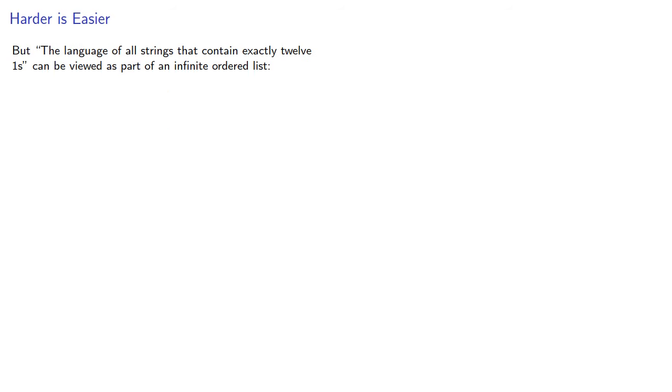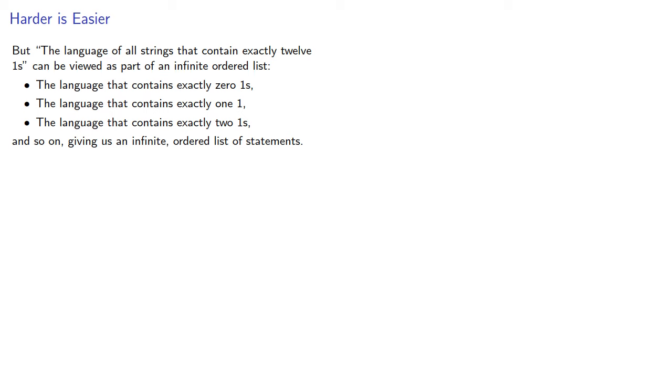On the other hand, the language consisting of all strings that contain exactly 12 ones can be viewed as part of an infinite ordered list: the language that contains exactly 0 ones, the language that contains exactly 1 one, the language that contains exactly 2 ones, and so on, giving us an infinite ordered list of statements.